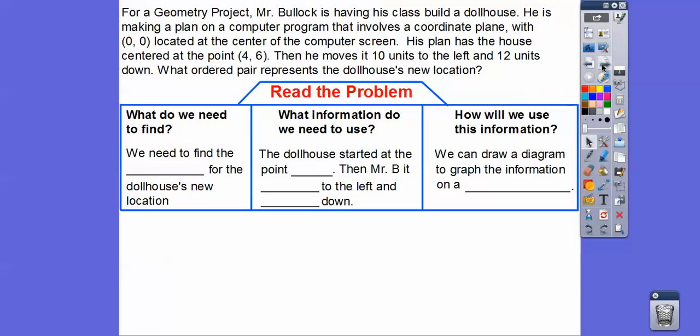So here's some questions. What do we need to find? Well, this last part says we need to find the ordered pair for the dollhouse's new location. The dollhouse started at the point, where'd that dollhouse start? Started at this point, (4, 6).